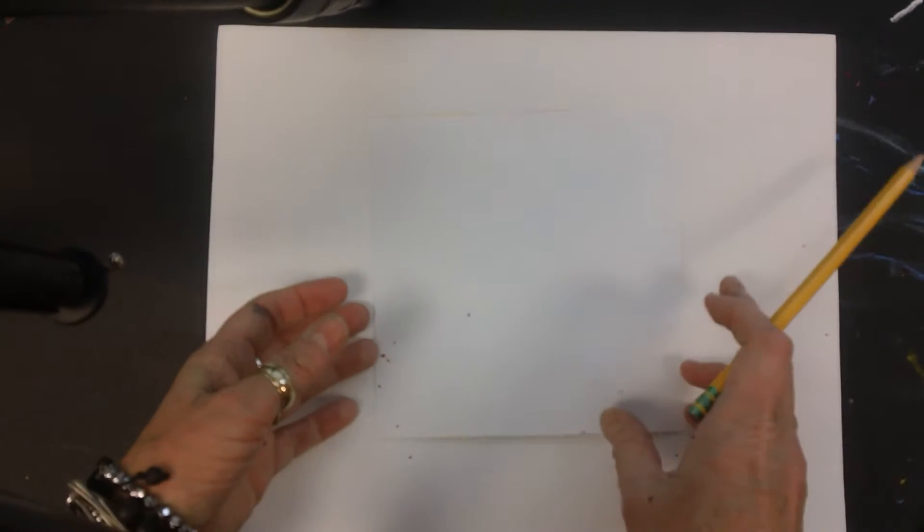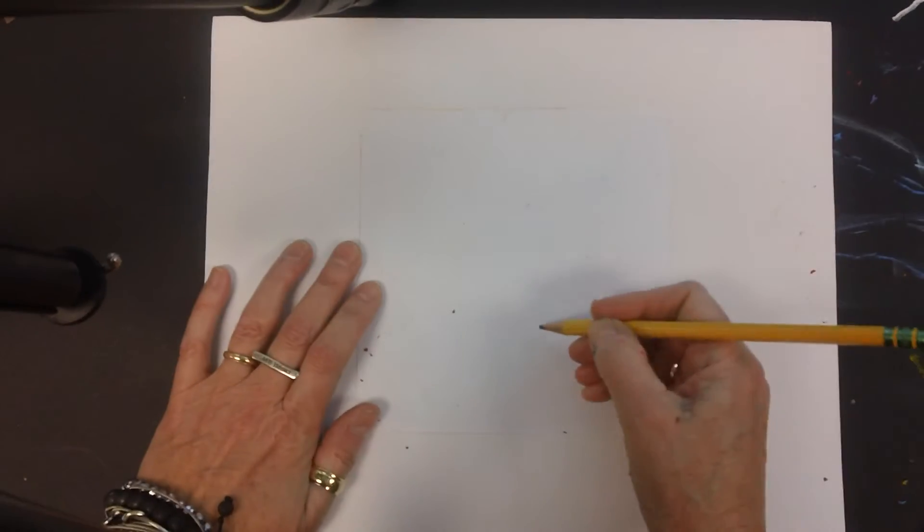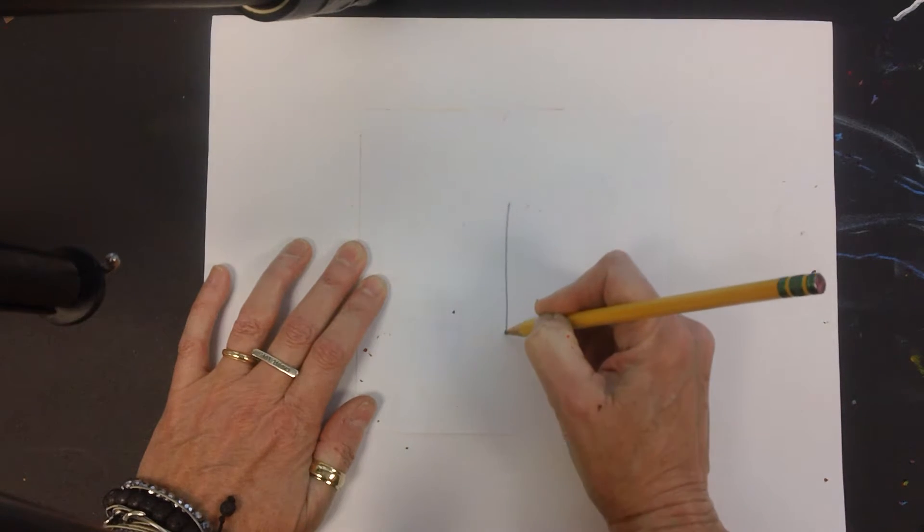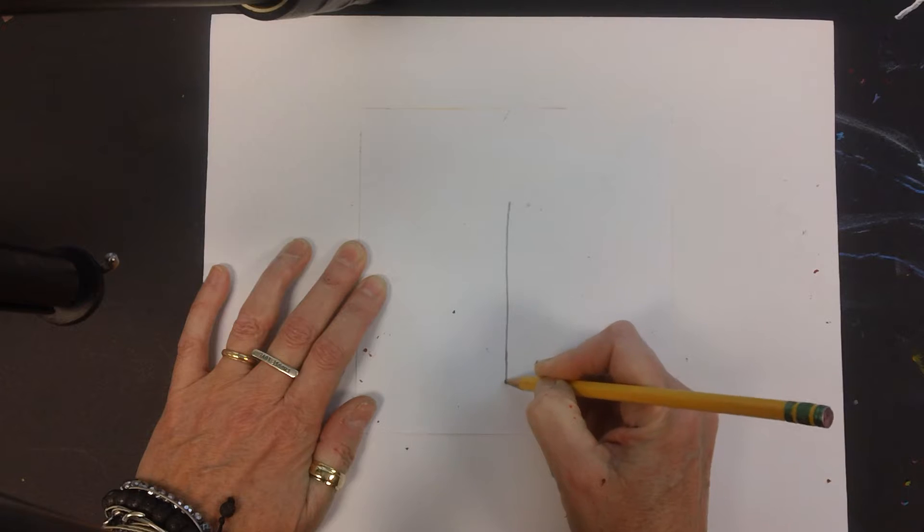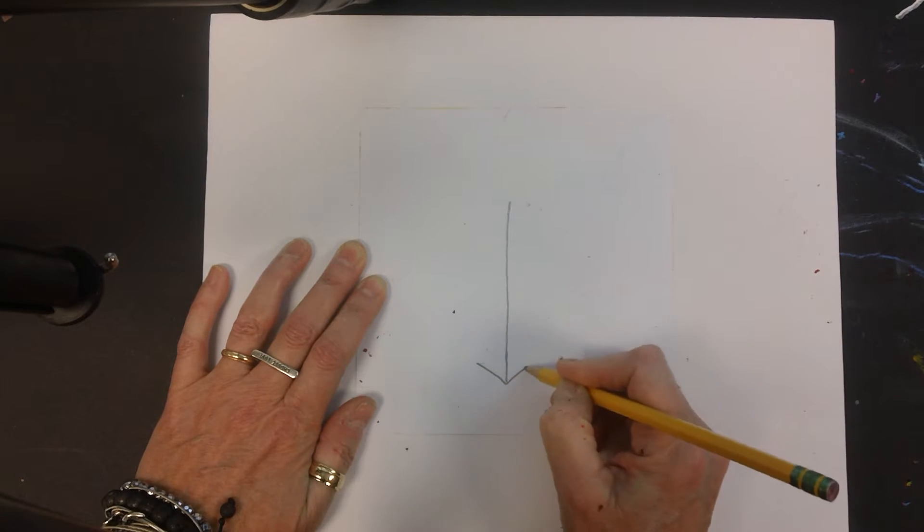I want to show you this way because I know sometimes people have a hard time drawing a heart and I want to show you what I think is kind of an easy way. So I'm going to take my pencil and somewhere in the center I'm just going to draw a line down, not to the end though, and then I'm going to make an arrow at the bottom.